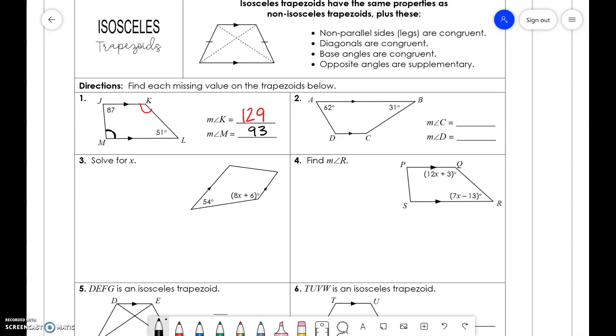Here again, we have non-isosceles, so we complete the same thing. To find angle C, it would be 180 minus 31, which is 149, and 180 minus 62, which is 118.